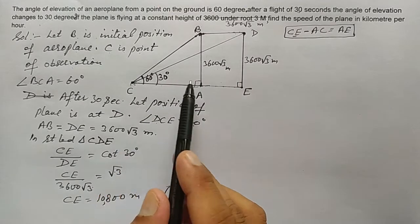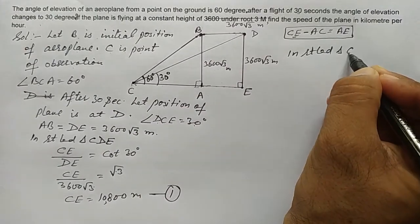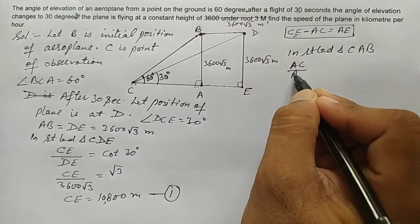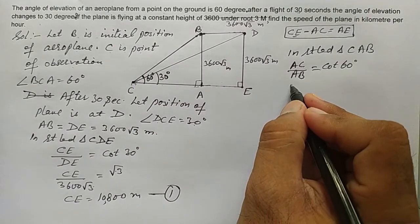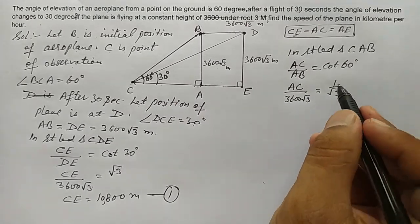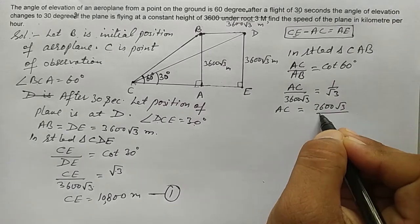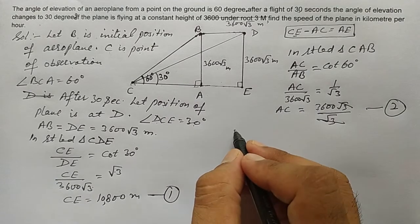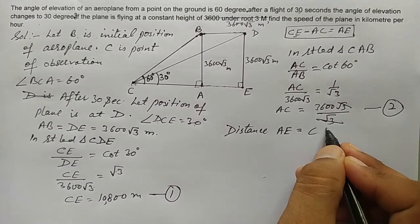Similarly, in right-angled triangle CAB: AC over AB = cot 60, so AC = 3600√3 × (1/√3). The √3 terms cancel, giving AC = 3600 meters.